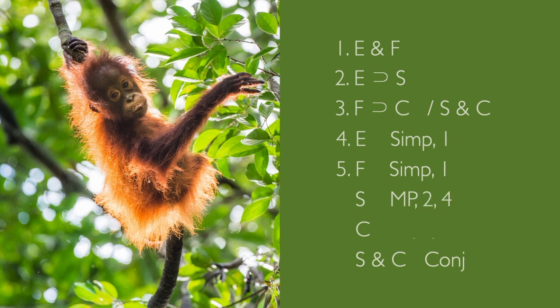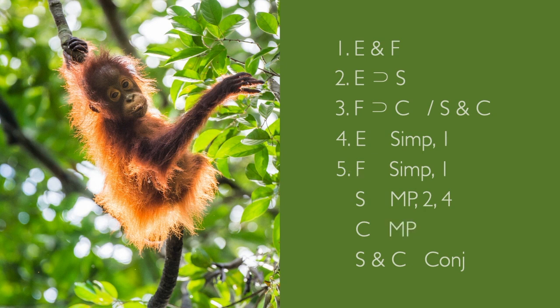Modus ponens was how we got c, too. We broke it off from line 3. To do that, we needed f — but that's okay, because we had it right here in line 5. So, modus ponens on lines 3 and 5. Let's just clean this up a bit by adding the numbers.